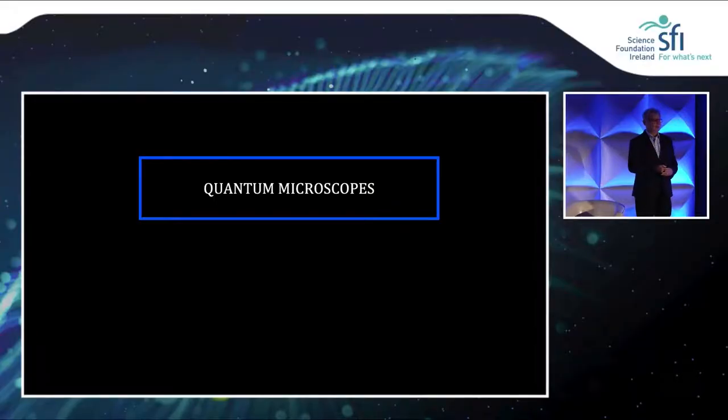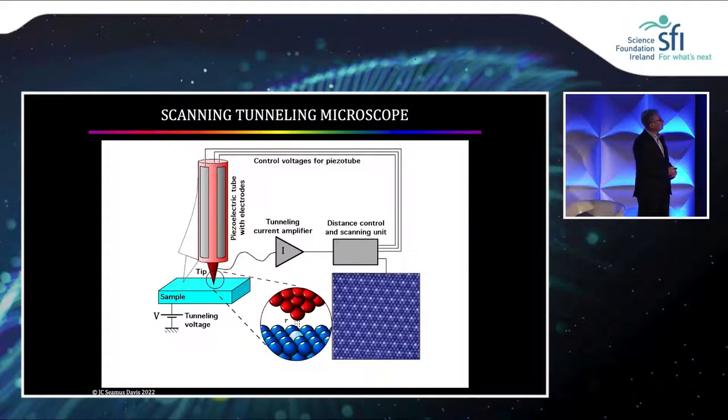So searching for the mechanism of high-temperature superconductivity. The main tools we use are quantum microscopes. First thing I want to do is just tell you how they work. We use a scanning tunneling microscope. It's a device with a very sharp needle with one atom on the end. You bring that needle near a surface you want to study, apply a voltage between the metallic needle and the thing you want to study, measure the current, and then if you use a feedback system to keep the current constant, you can make an image showing you where the atoms are.